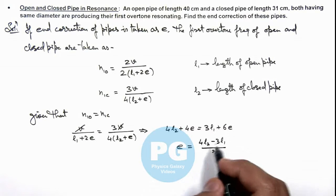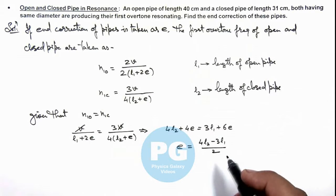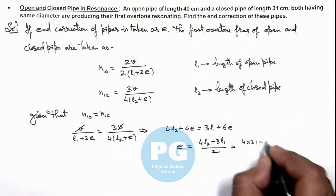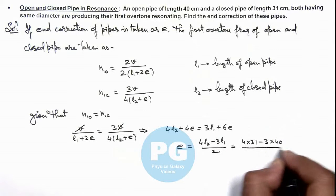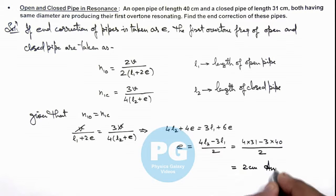The lengths of open and closed pipe are already given to us as 40 and 31, so this will be 4 times 31 minus 3 times 40 divided by 2. On simplifying and substituting the value we get it as 2 centimeters, that is the result of this problem.